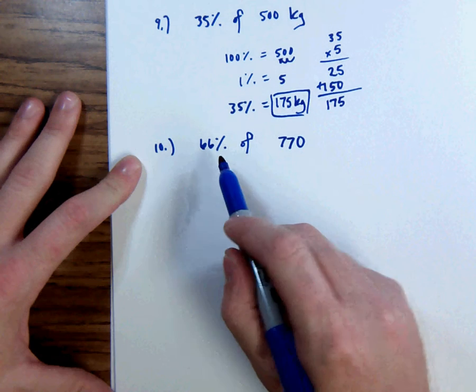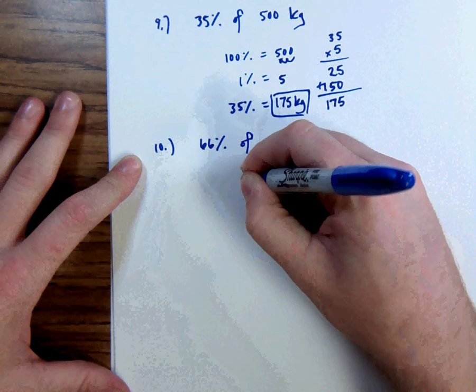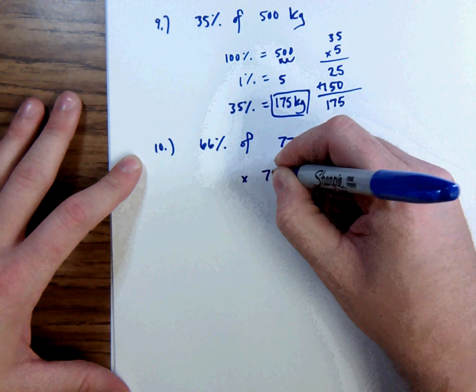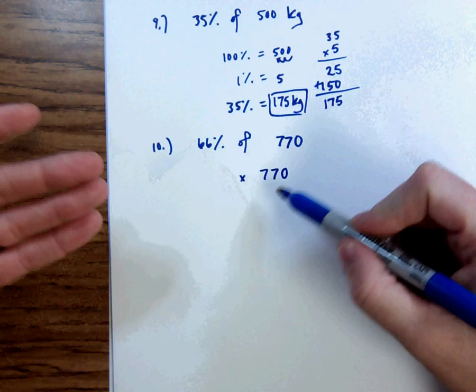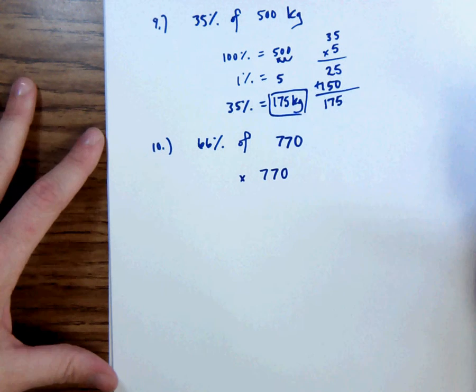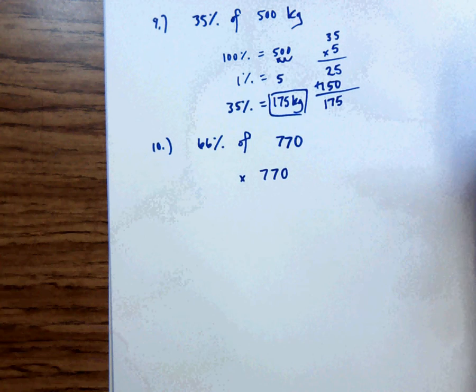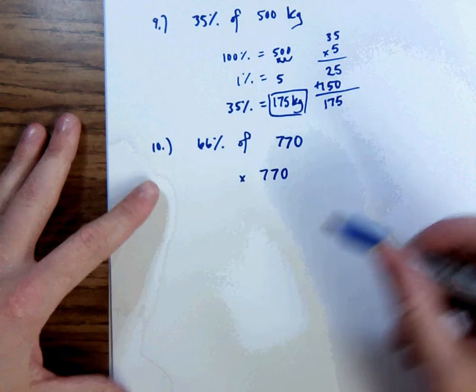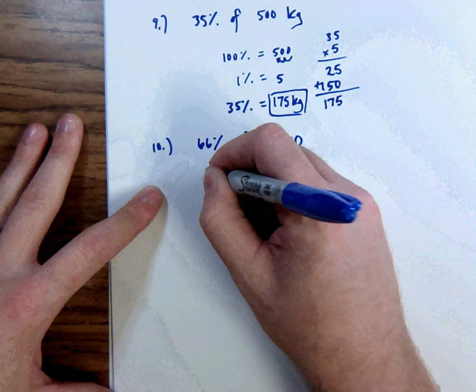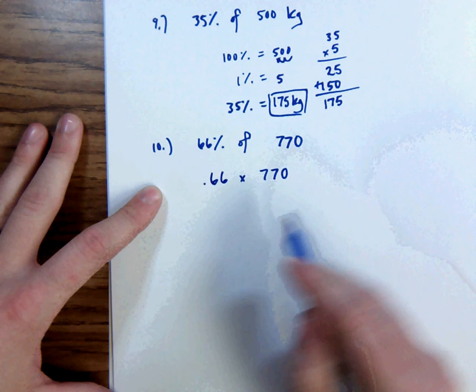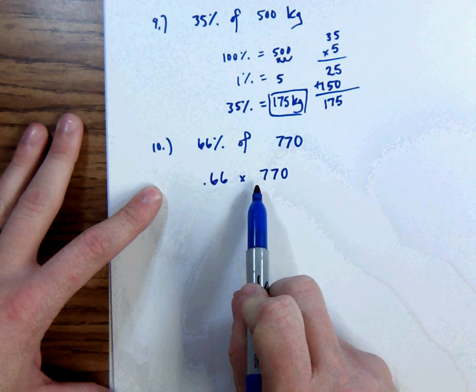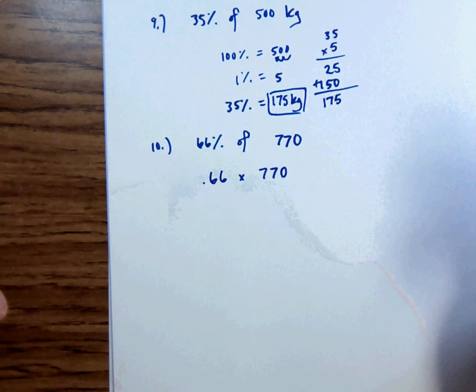Alternatively, we can say the word 'of' means to multiply. 770, that's fine. We can write that. But 66%, we don't multiply numbers by percentages. But what we do is we multiply them by the decimal that is representative of 66%. So we could say this is 0.66. So 0.66 times 770. So if we did it like that, we would say 770 times 0.66.